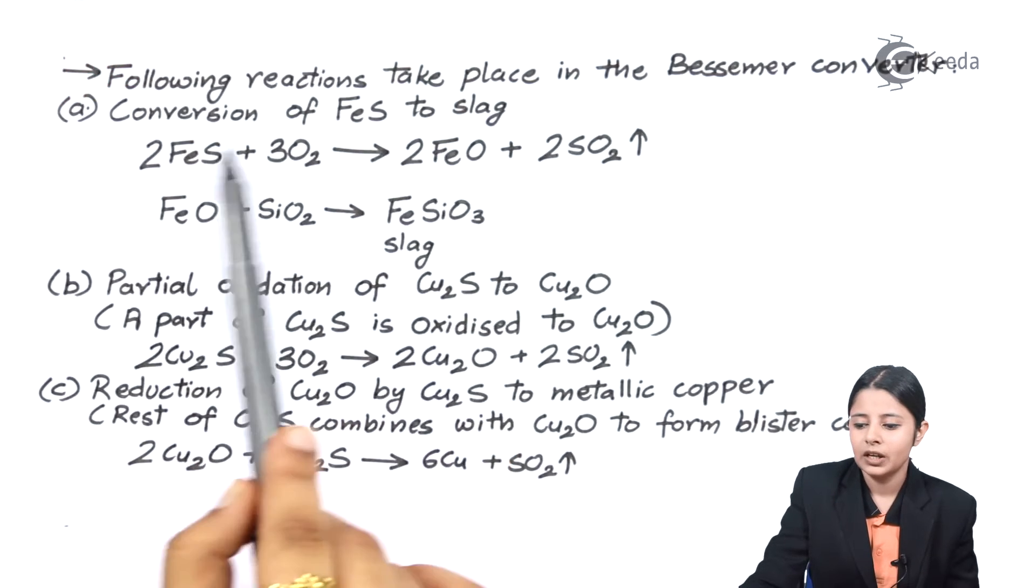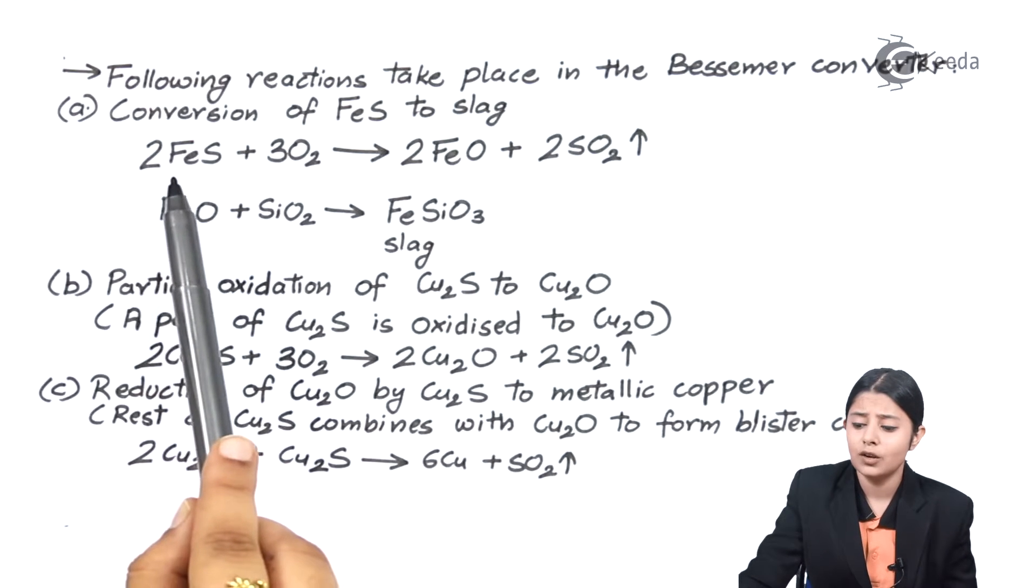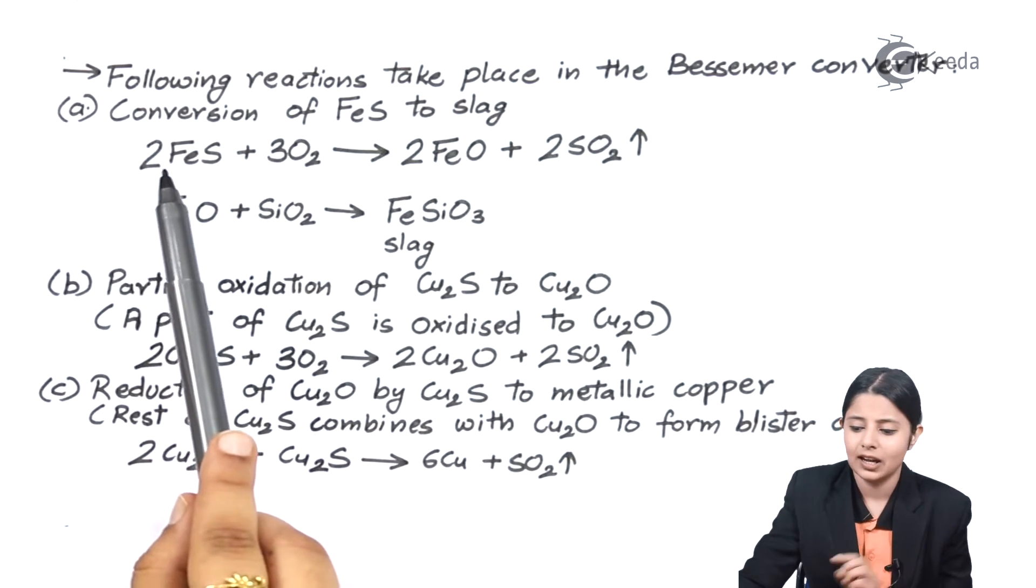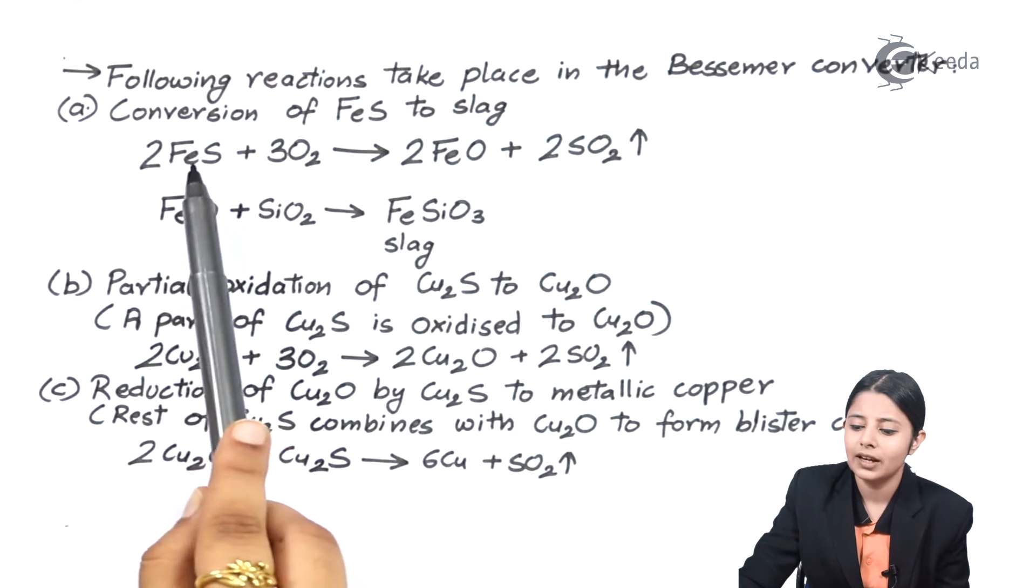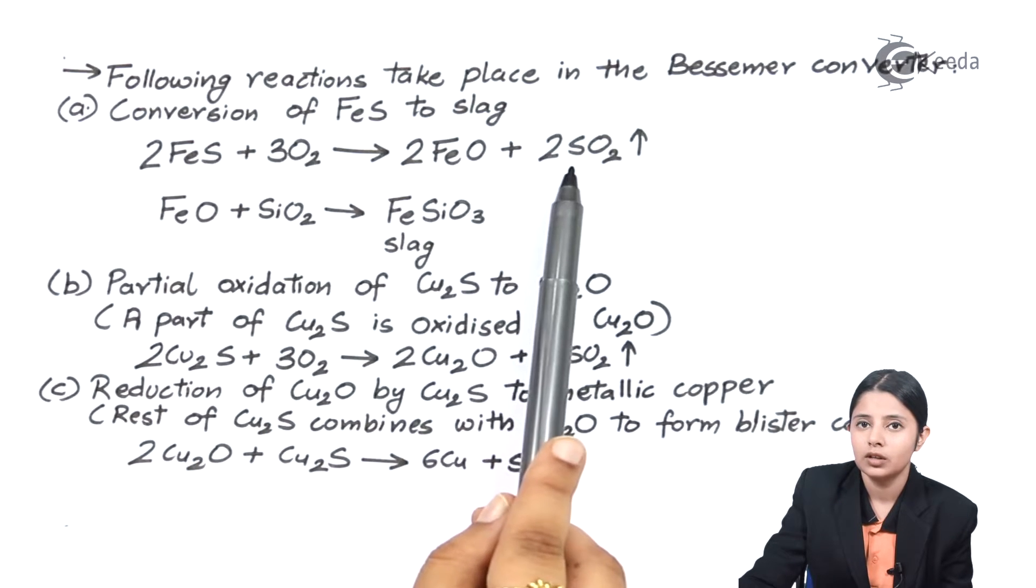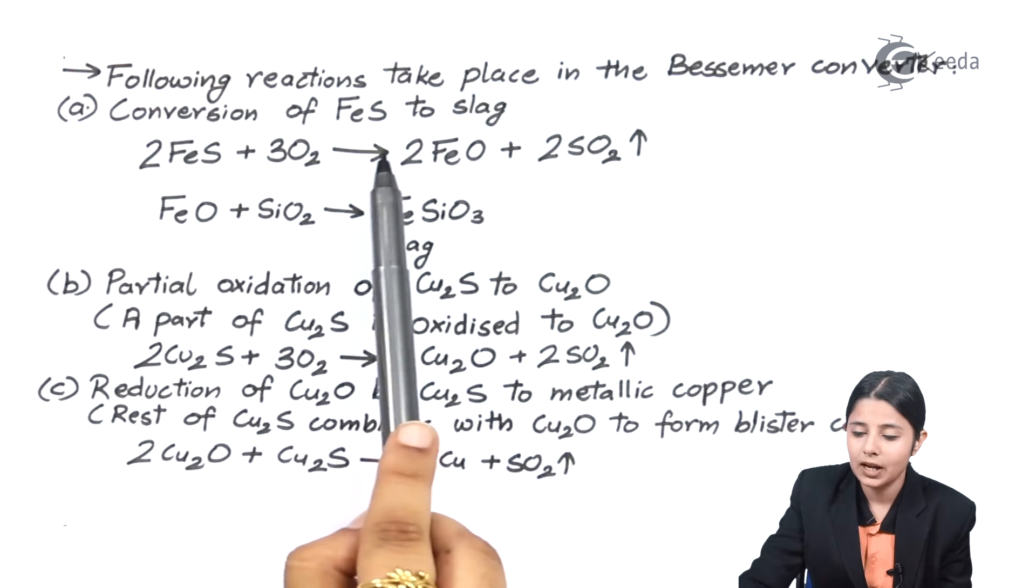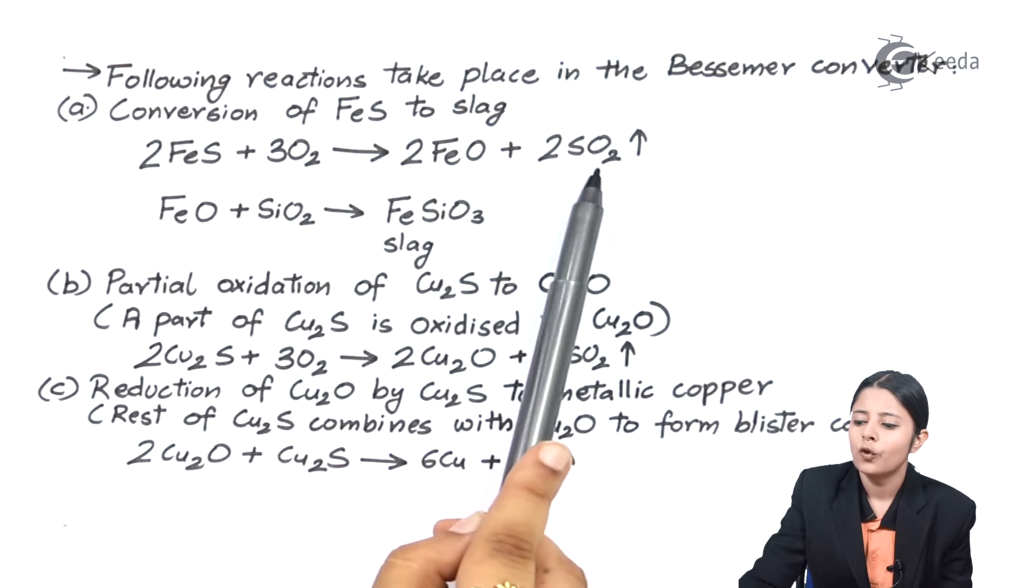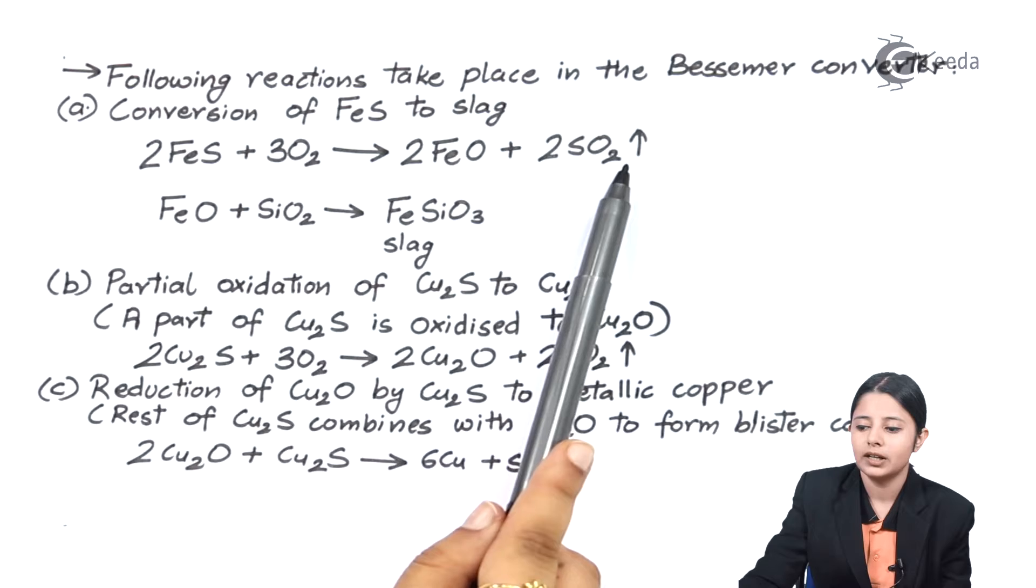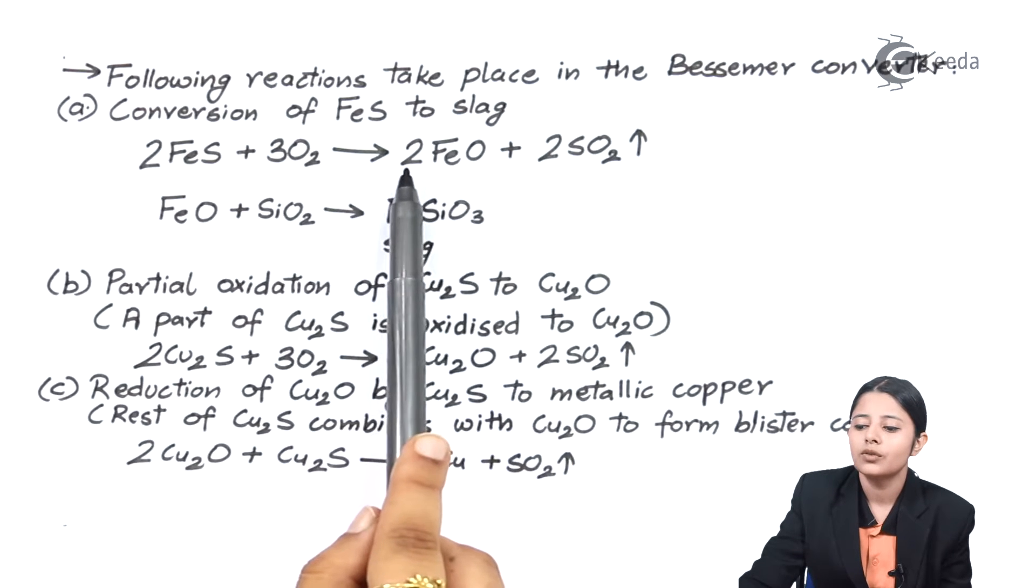Conversion of ferrous sulphide to slag. 2FeS plus 3O2 forming 2FeO plus 2SO2. FeS is my ferrous sulphide plus 3 times oxygen forms FeO plus 2SO2. Let us now balance these reactions. We have on the reactant side 2 iron. Over here also we have 2 iron. We have 2 sulphur. On the product side also we have 2 sulphur. And over here we have 3 into 2 that is 6 oxygen. Over here we have 2 into 2, 4, plus for this FeO 2 into oxygen that is 2. 4 plus 2 which is 6.